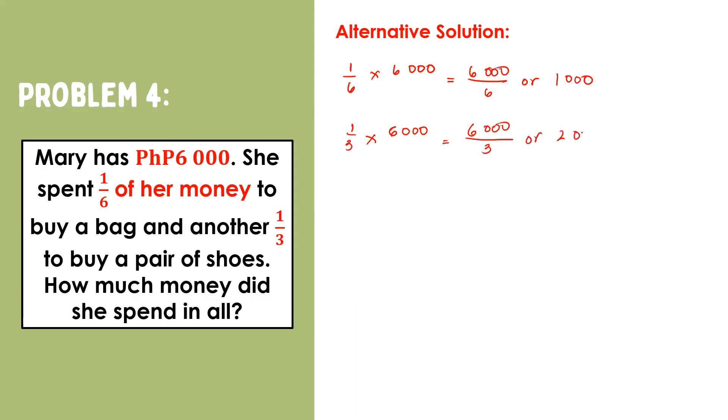This tells us that one-thousand was spent on bag and two-thousand was spent on a pair of shoes. Adding these two will give us three-thousand. Therefore, Mary spent three-thousand pesos in all. This is the same answer as what we had earlier.